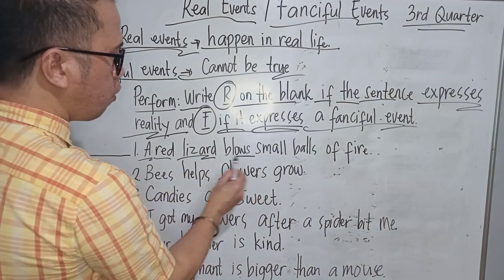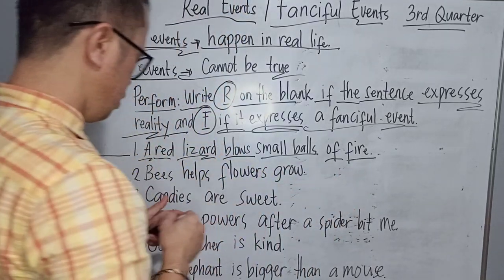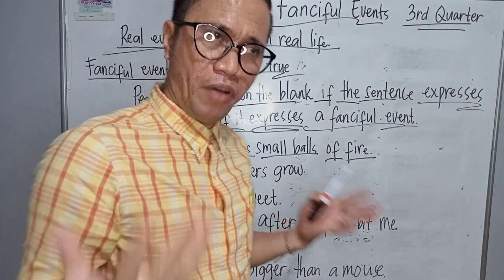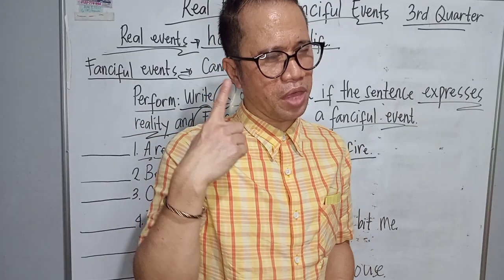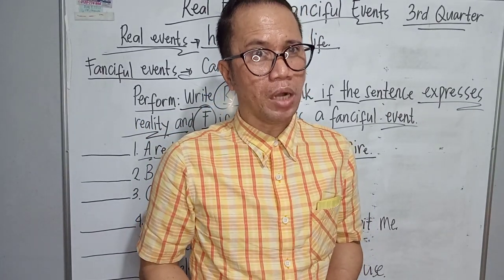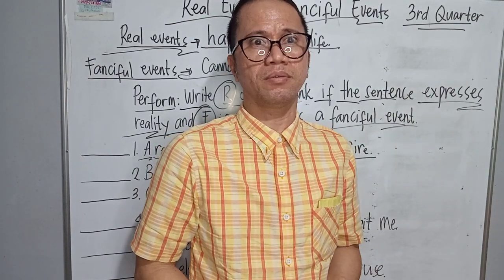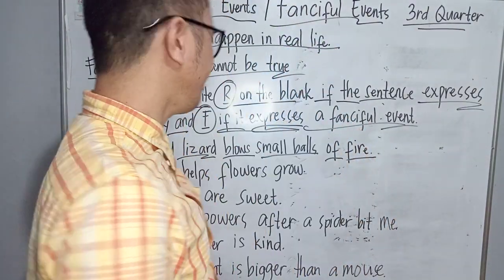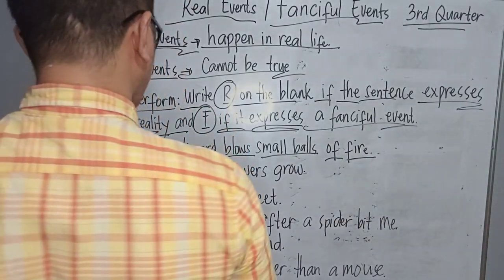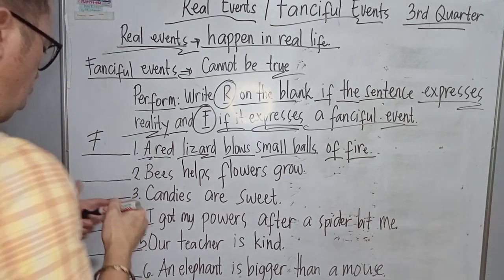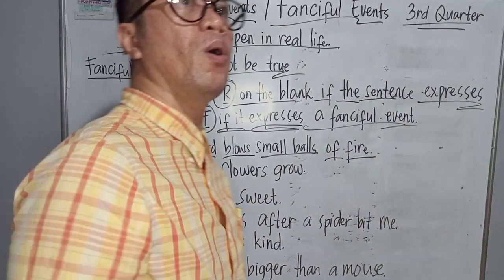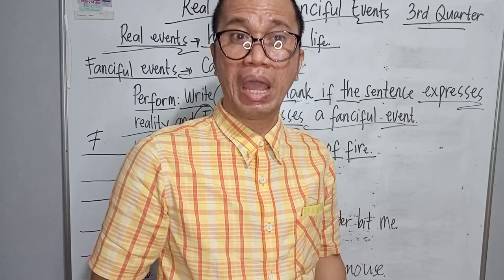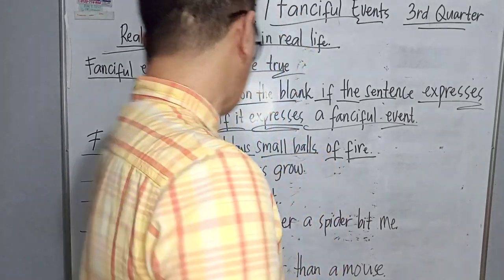Number one: Red lizard blows small balls of fire. Do you think a small lizard can blow balls of fire? Think about whether these animals can blow even small fire. Is it a real event or a fanciful event? We are going to write letter F, because there is no basis for a lizard blowing small balls of fire at all.